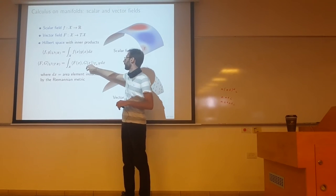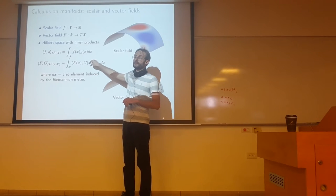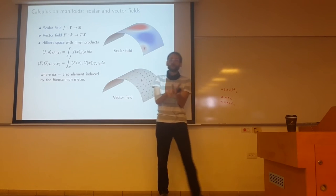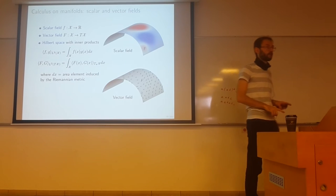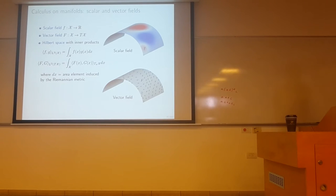The inner product here under the integral is understood as the Riemannian metric, basically the inner product in the tangent space of two vector fields at that point. And dx here will be given by the square root of the determinant of the metric. It's the area element induced by the Riemannian metric.